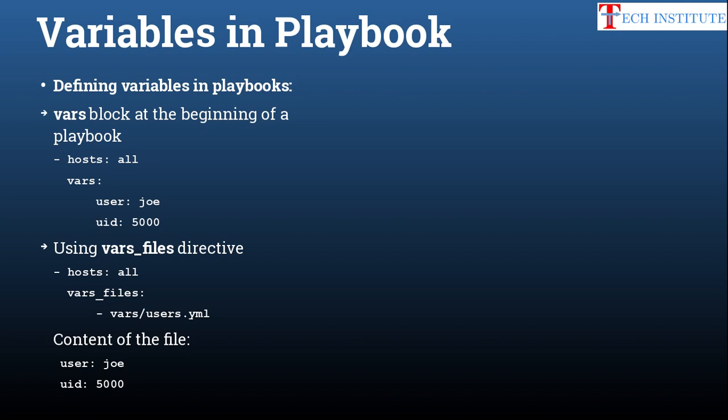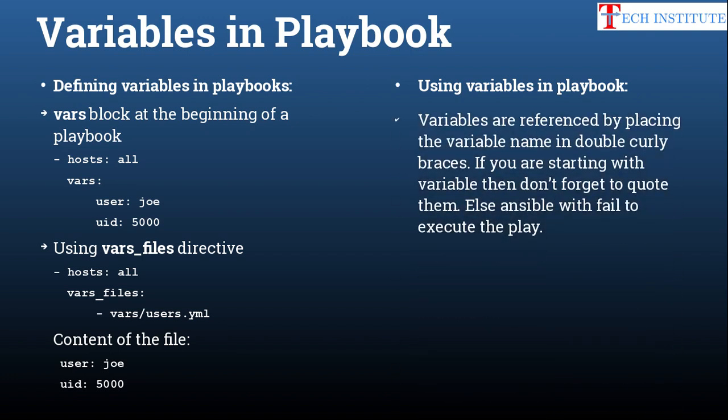To use a variable you have defined, you wrap it in double curly braces — for example, '{{ user }}' — so Ansible knows to substitute the variable's value. One important thing: if your statement starts with a variable, you must quote the double curly braces in quotes; otherwise Ansible will fail. For example, when giving a name in the user module that starts with a variable, it must be placed in double quotes.